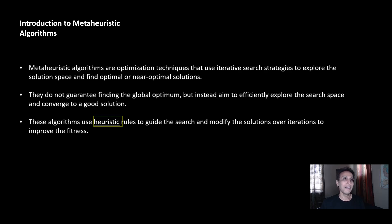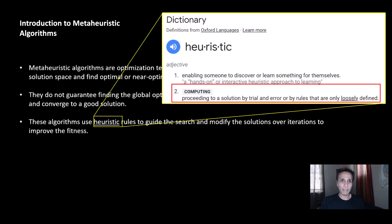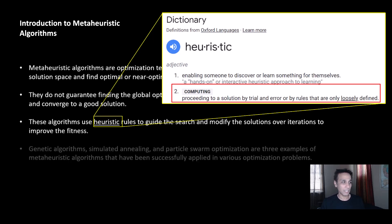What is a heuristic approach? It's basically proceeding to a solution by trial and error. You have a specific approach depending on the algorithm, and then you do trial and error, quantifying the optimization using an objective function. If the result is not better than the last iteration, you go back and try something else, exploring the solution space to find the maximum or minimum.